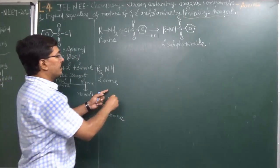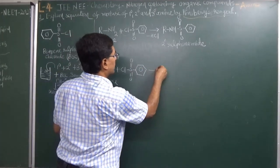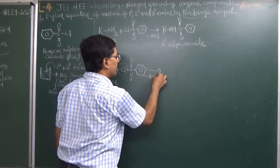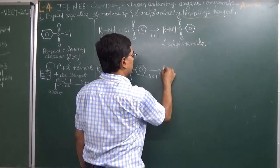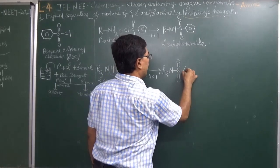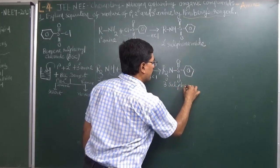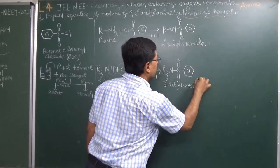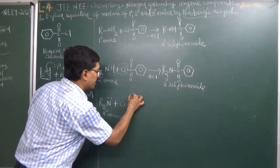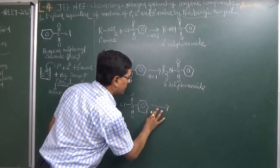Secondary Amine will also react with benzene sulfonyl chloride in the same way, but the product will be tertiary sulfonyl amide. The hydrogen is removed as HCl, giving the structure R₂N bonded to S(=O) and the benzene ring — this is known as tertiary sulfonyl amide. Tertiary Amine has no reaction with the Hinsberg reagent.